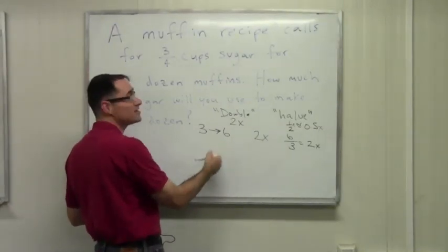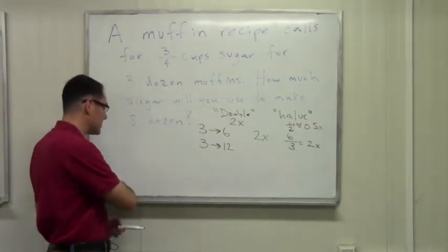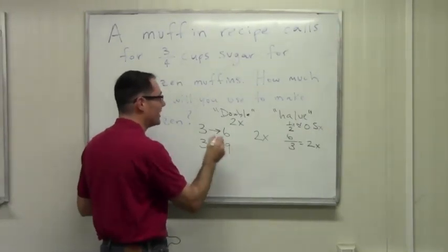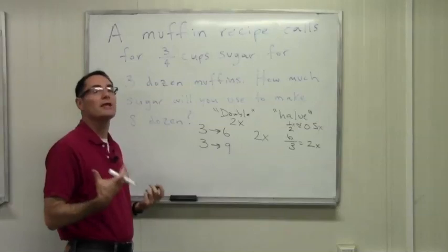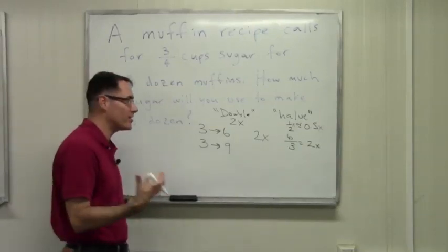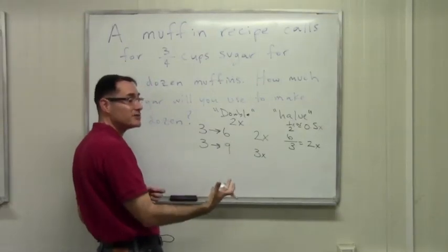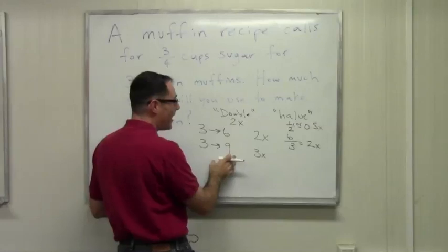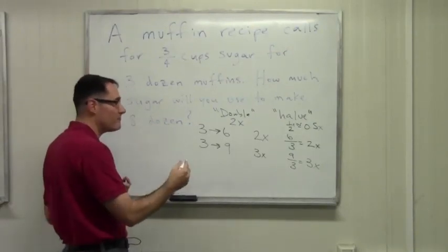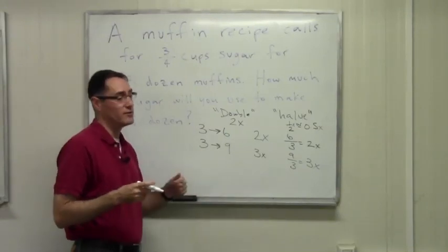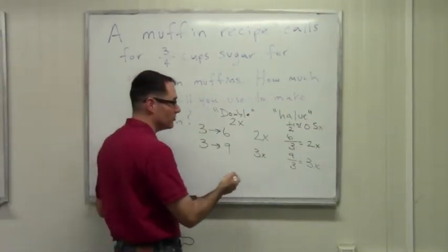Let's do another example. Instead of 6 dozen, let's say you're going to go to 9 dozen muffins — from 3 dozen to 9 dozen. You know implicitly that you're tripling the recipe. Triple means 3 times as much. Where does that 3 come from? It comes from 9 divided by 3. Similarly, going from 3 dozen to 12 dozen: 12 divided by 3 equals 4 — you're quadrupling the recipe, so you multiply by 4.